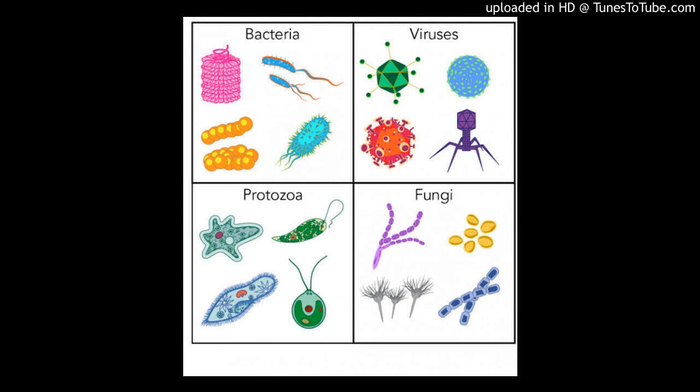The microorganisms that cause diseases in humans, plants and animals are called harmful microbes or germs. Other microbes are essential for a healthy life. Without them, we could not survive and with them, we can thrive. Children, there are four kinds of microbes: bacteria, protozoa, fungi and viruses.